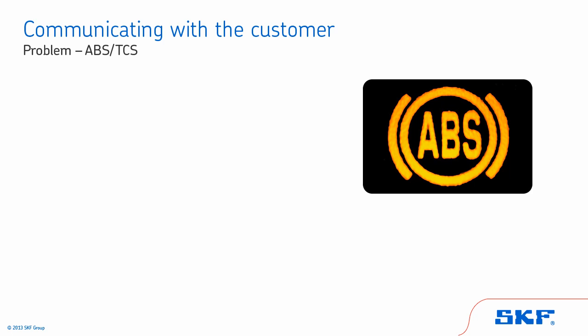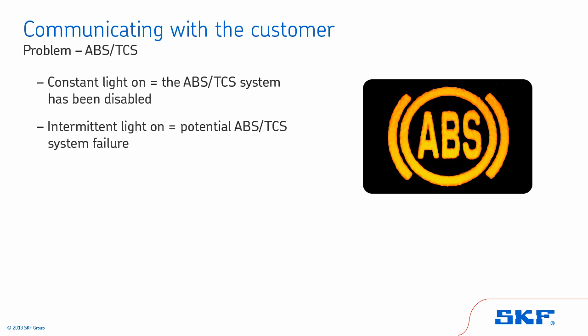Anti-lock brake system and traction control system: if they are having ABS or TCS issues, is there a constant light on? This would indicate that the ABS/TCS system has been disabled due to a fault. Is there an intermittent light on? This would indicate potential ABS/TCS system failure. Are they having premature ABS/TCS modulation?